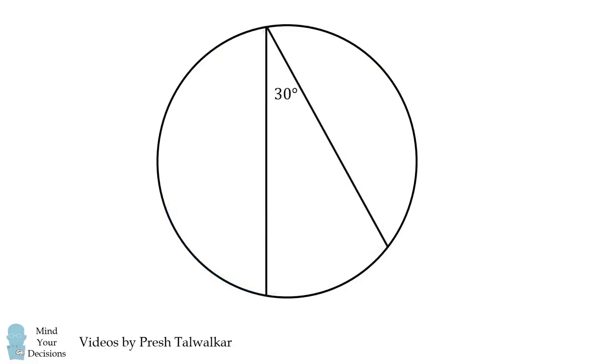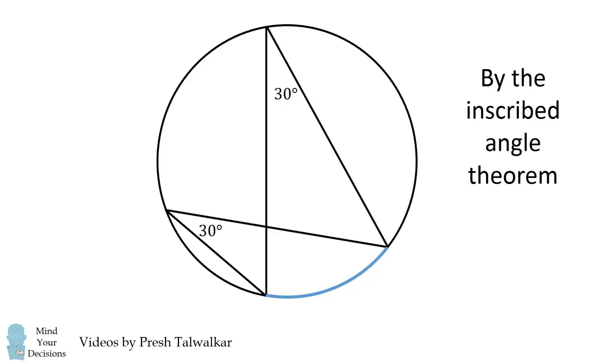Now we'll do a similar thing for this inscribed angle. It corresponds to this arc of the circle. Therefore, this inscribed angle will also measure 30 degrees.